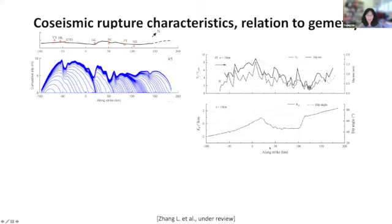I want to talk about the general feature of the rupture speed as a function of along-strike distance. From the correlation between the top and middle plots, we can see there is a very obvious first-order correlation: rupture speed accelerates or becomes faster as we go to steeper dipping faults and drops as we come to shallower dipping faults. This along-strike gradient in the fault dipping angle is playing the key effect. There are also smaller, shorter-wavelength variations in the rupture speed and slip rate along the profile.